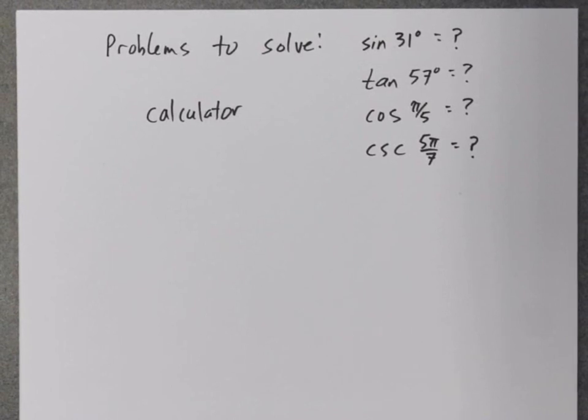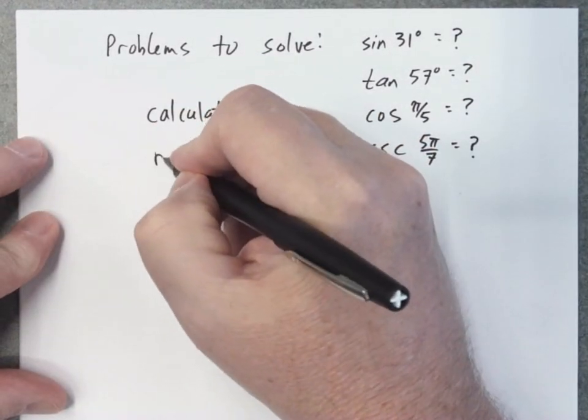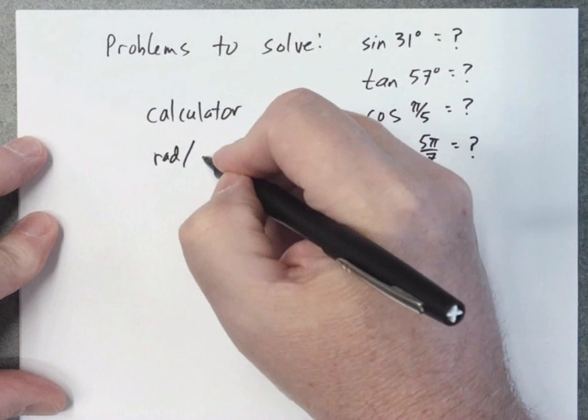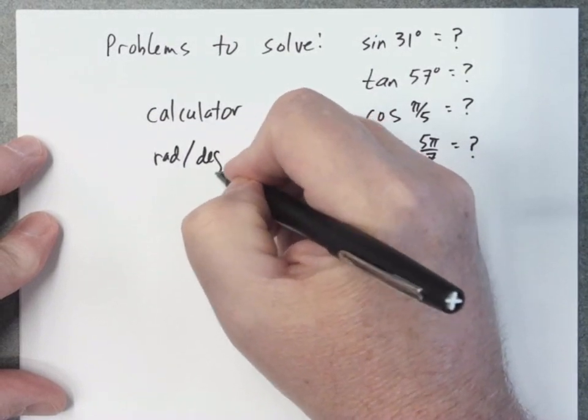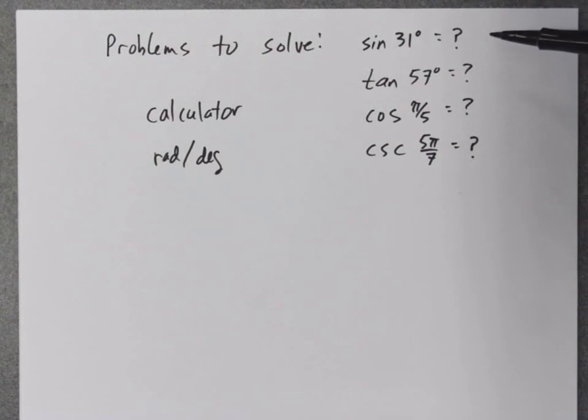When you are taking your quizzes or your exams, you need to make sure you have a calculator you know how to use. Now, here's one of the big keys and one of the most common mistakes students will make when they're working these problems. These should be very easy problems to get correct. When students miss it, here's the reason, probably 90% of the time why they would miss something like this, and that's because you have to be careful: is your angle in degrees or radians?